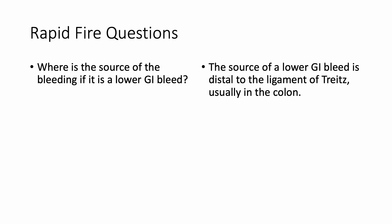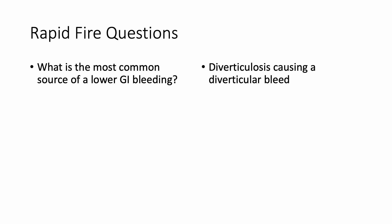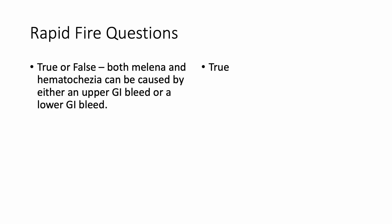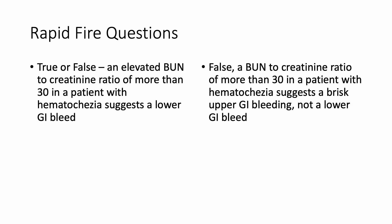Now let's do some rapid fire questions. Where is the source of a lower GI bleed? Distal to the ligament of Treitz, usually in the colon. What is the most common source? Diverticulosis causing diverticular bleeding. What is a common feature of a lower GI bleed? Hematochezia, which is passage of bright red blood through the anus. True or False: both melena and hematochezia can be caused by either an upper GI bleed or a lower GI bleed. True. True or False: an elevated BUN to creatinine ratio of more than 30 in a patient with hematochezia suggests a lower GI bleeding. False. A BUN to creatinine ratio of more than 30 in a patient with hematochezia suggests a brisk upper GI bleeding, not a lower GI bleed.